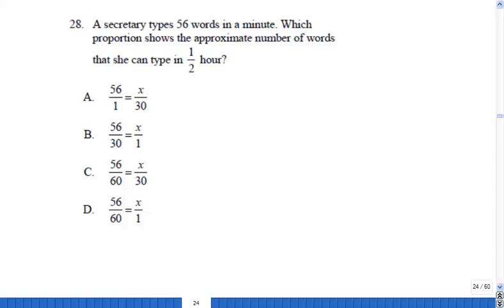Problem 28: The secretary types 56 words in a minute. Which proportion shows the approximate number of words that she can type in one half of an hour? You have to be careful here because this secretary types 56 words per minute.